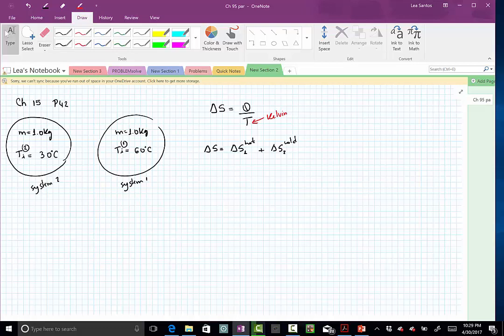So I know that this change in entropy will be the heat that the hot one loses divided by a certain temperature that I have to find out. I'll put the temperature for the hot one, plus the Q that the cold one is going to receive, so these two Q's are the same. And I have to decide what temperature I'm going to put in the denominator.